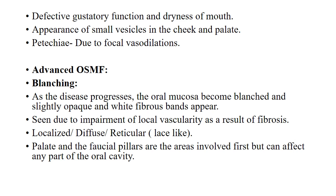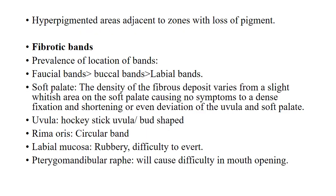In advanced OSMF, blanching is seen. As the disease progresses, the oral mucosa becomes blanched, slightly opaque, and white fibrous bands appear. This is due to impairment of local vascularity as a result of fibrosis. It can be localized, diffuse, or reticular-like. The palate and faucial pillars are the areas involved first, but it can affect any part of the oral cavity.